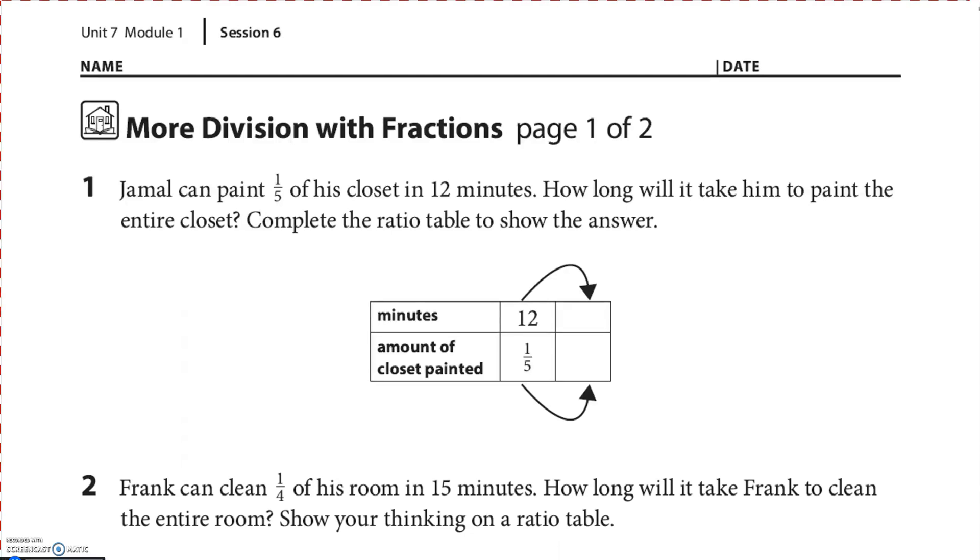Alright, so Jamal can paint half of his closet in 12 minutes. How long will it take him to paint the entire closet? Complete the ratio table to show the answer. So I've been thinking about this one a little bit, and I was thinking, well, he can do one-fifth. What if I said two-fifths? I know the ratio table just goes to one section. So two-fifths would just be another 12, right? So that's 24.